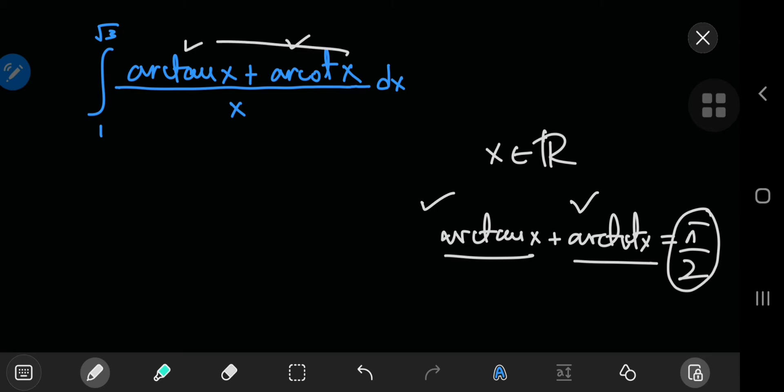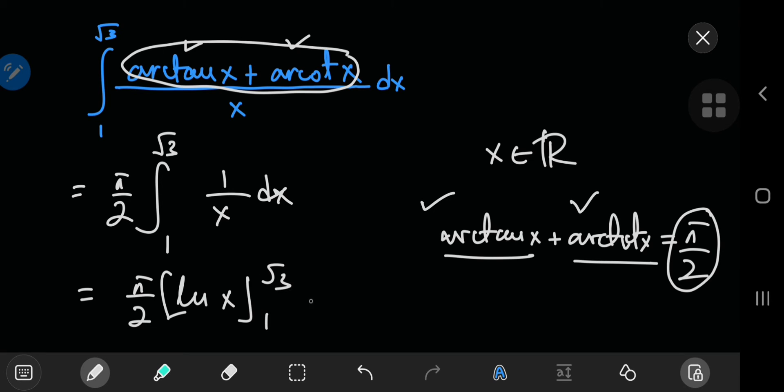That means everything in the numerator is just pi by 2, which is a constant. Let's take it out: pi by 2 integral from 1 to square root 3 of 1 by x dx. This reduces to the natural log of x with limits being 1 and square root 3. The natural log of 1 is 0, so just ignore it.